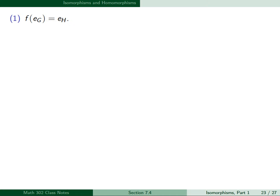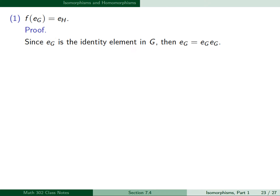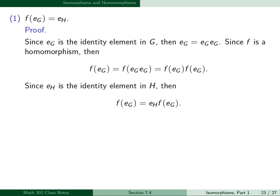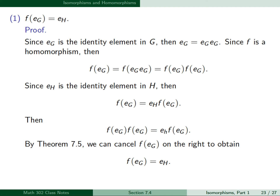To prove part 1, f(e_G) = e_H: since e_G is the identity in G, e_G = e_G ★ e_G. Since f is a homomorphism, f(e_G) = f(e_G ★ e_G) = f(e_G) · f(e_G). On the other hand, f(e_G) = e_H · f(e_G). Setting these equal and canceling f(e_G) on the right by Theorem 7.5, we obtain f(e_G) = e_H. This proves part 1.